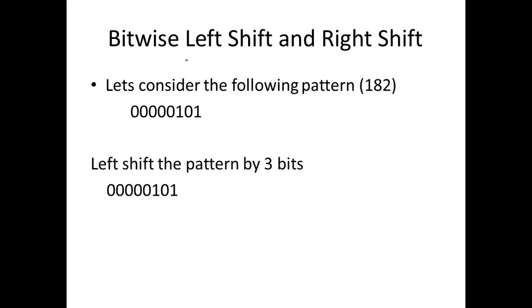Now let's take a look at bitwise left shift and right shift operations. Let's consider the bit pattern 000000101. We need to left shift the pattern by three bits. What we'll do here is discard the three bits on the left side and then move the other bits to the left.